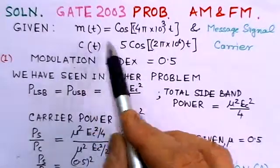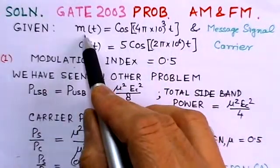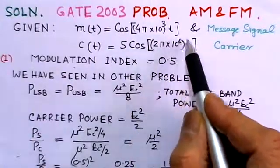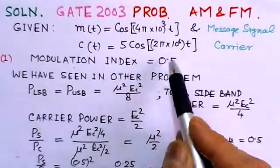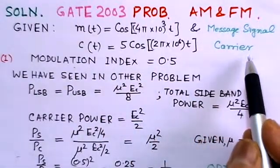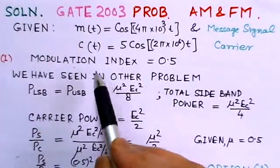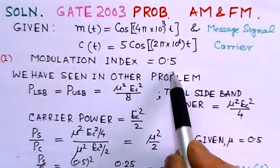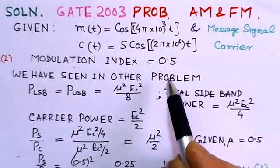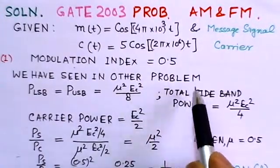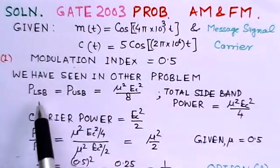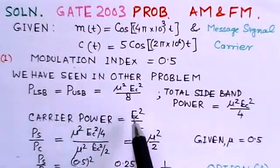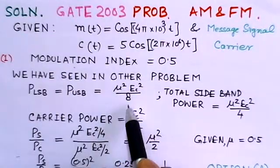What is given: the message signal m(t) = cos(4π × 10³t), and the carrier wave c(t) = 5cos(2π × 10⁶t). The modulation index μ is also given. We have seen in earlier problems how to determine the power in the sidebands. The power in the lower sideband equals the power in the upper sideband, which is μ²Ec²/8, where μ is the modulation index.